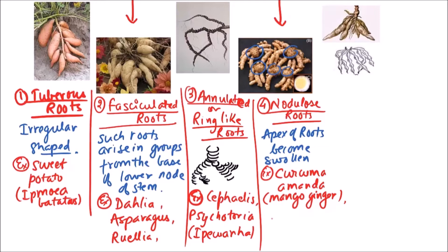Another example of this category is Marenta, which is also known as arrowroot.